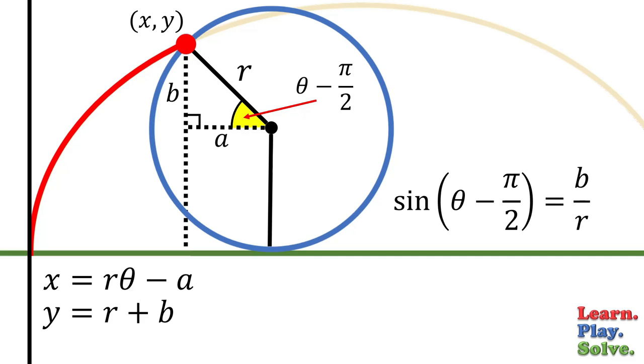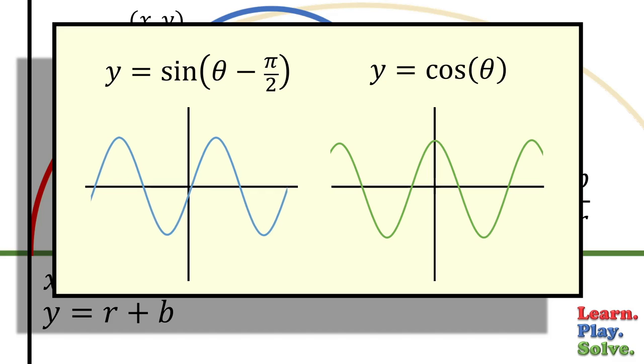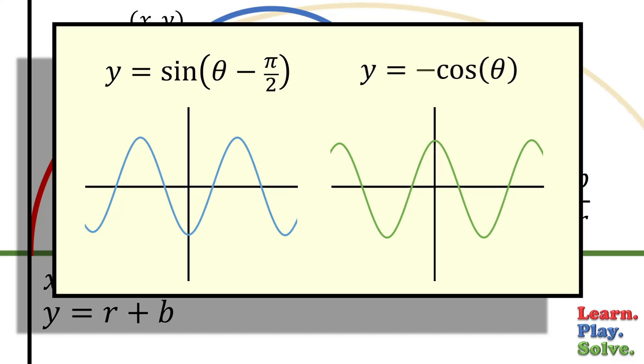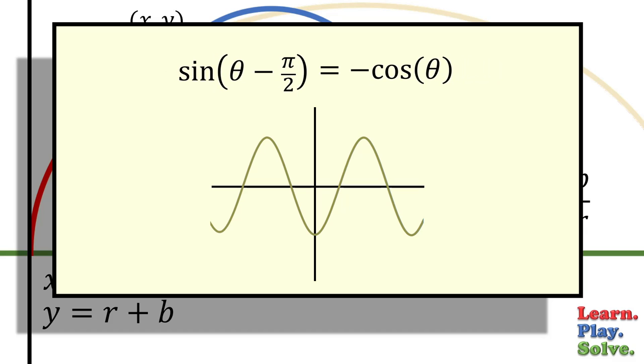We can simplify this trigonometric function. Look at these two graphs. If you notice, for the sine function, if you subtract pi over 2 from theta, it shifts the graph over, like this. This is identical to what would happen if we flipped the cosine function vertically. So sine of theta minus pi over 2 is equal to negative cosine theta.